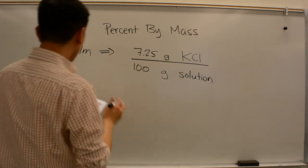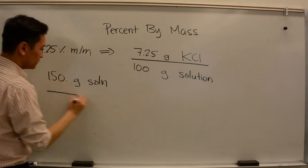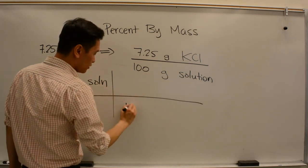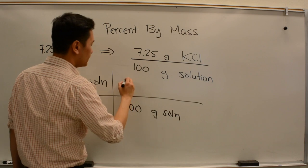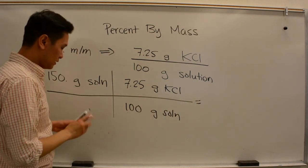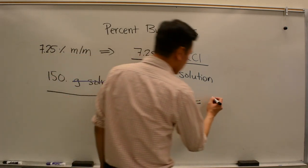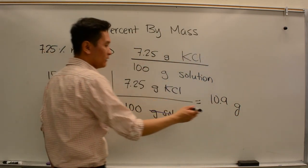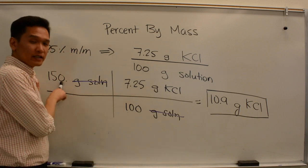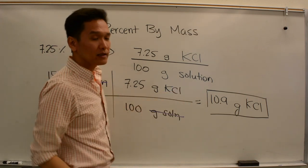So we start with our given: 150 grams of solution. We use the percentage as a conversion factor: 7.25 grams KCl per 100 grams of solution. The grams of solution cancel out, giving us 10.9 grams of KCl. A note about sig figs: we have three sig figs in 150 and three sig figs in 7.25. The 100 is from percent and doesn't count, so our answer has three sig figs: 10.9 grams of KCl.